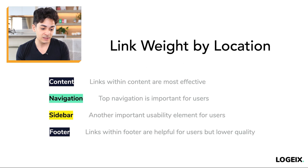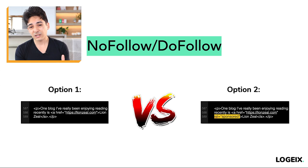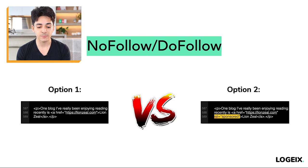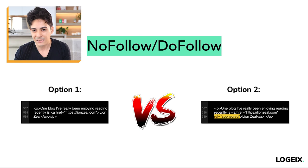Next up, we have nofollow versus dofollow. There are other attributes like rel equals sponsored that also tell search engines not to pass benefits through a link. What you really want is a dofollow link — one that doesn't specify nofollow, sponsored, or anything like that — meaning search engines follow this link, crawl it, and pass benefits through it. Does that mean nofollow or sponsored links are absolutely worthless? No, but generally speaking you want dofollow links. Especially if you're putting in a lot of effort or paying for this, you absolutely need to specify that it's a dofollow link, not a nofollow, sponsored, or other type of link.